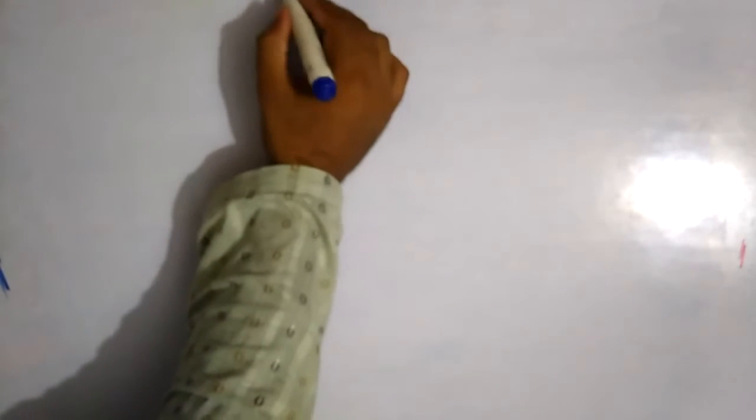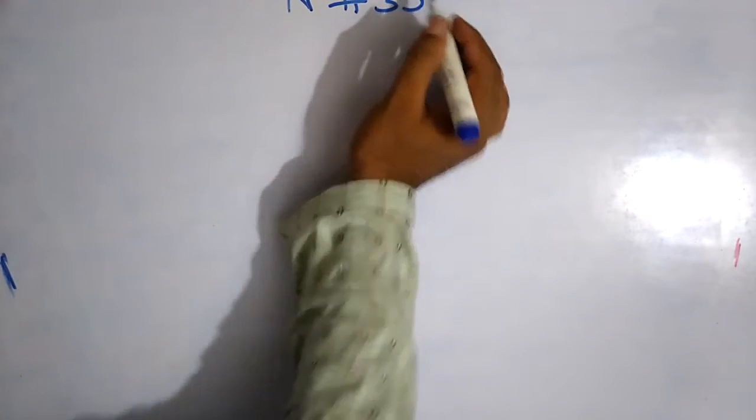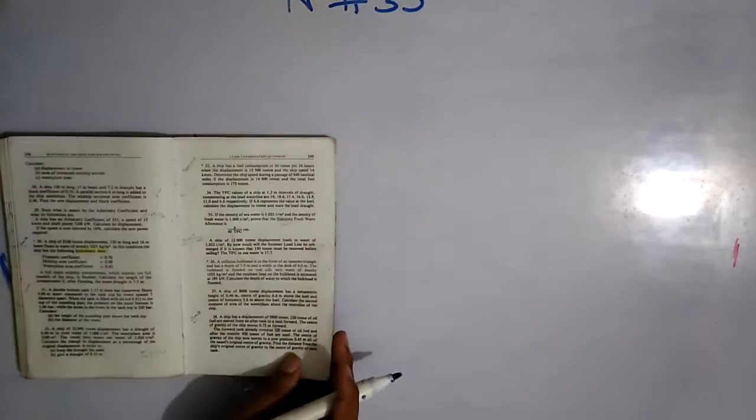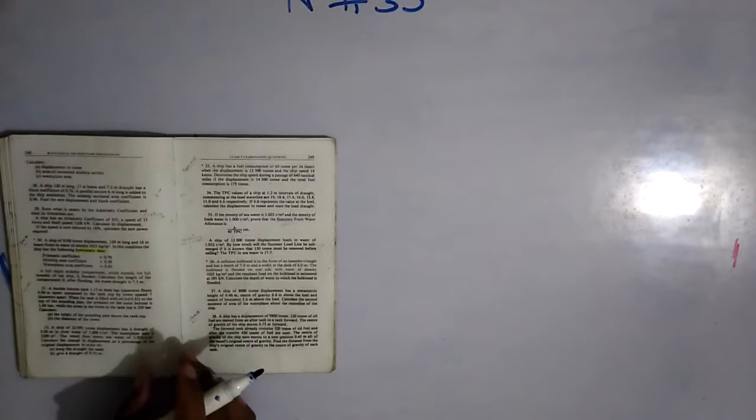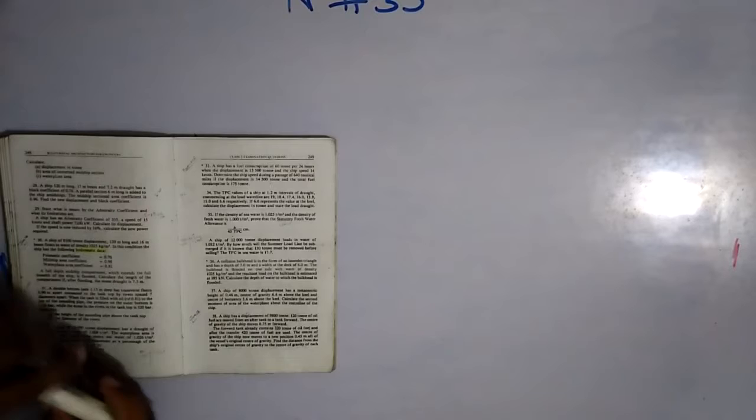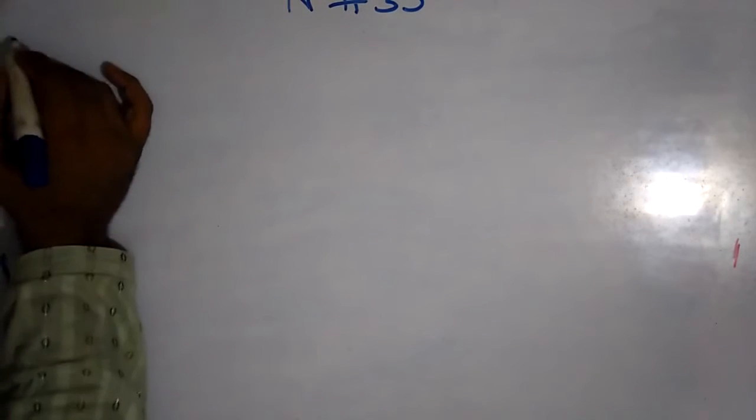Assalamu alaikum viewers, now I am solving numerical number 33 which is about a ship that has a fuel consumption of 60 tons per 24 hours when the displacement is 15,500 tons and the ship's speed is 14 knots. Determine the ship speed during a passage of 640 nautical miles if the displacement is 14,500 tons and the total fuel consumption is 175 tons. So I am writing the data given.